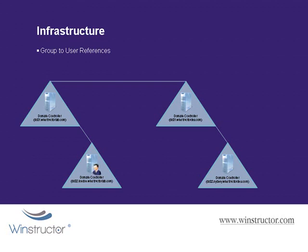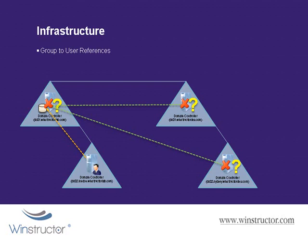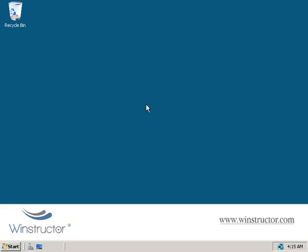The final operations master role is the infrastructure role. The infrastructure master is responsible for updating cross-domain group-to-user references. When you change a user account or add a user to a group, these changes don't tend to show up in other domains for quite a while. The infrastructure master helps speed up this process by comparing its data against what's stored in the global catalog — if it finds outdated data, it updates it and replicates it out to the other domain controllers. If the infrastructure master is down, these group-to-name references won't be available, and a user who has been added to a group granting access to a resource in another domain will likely be denied access.